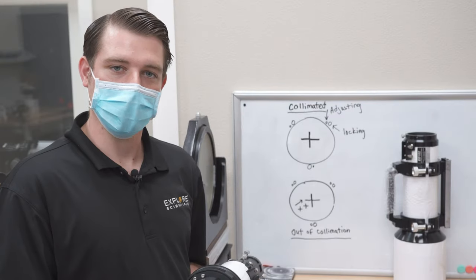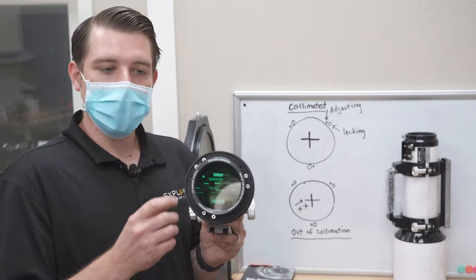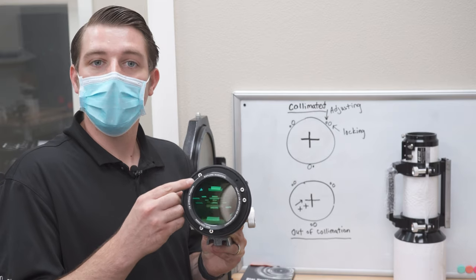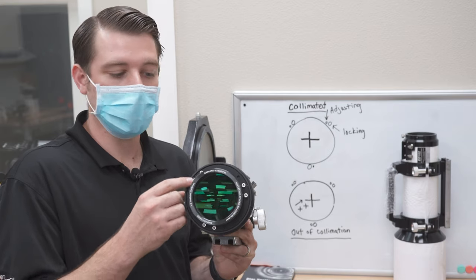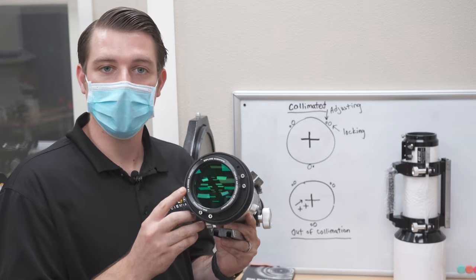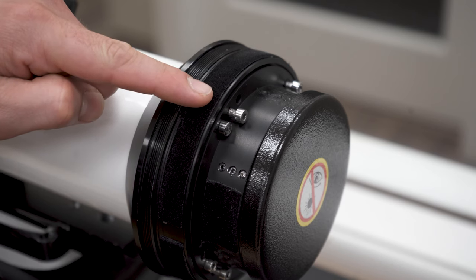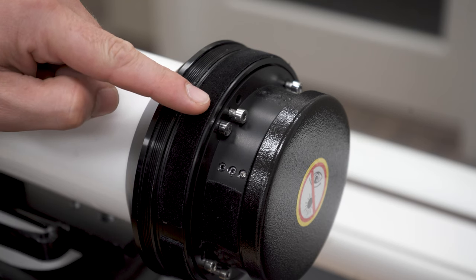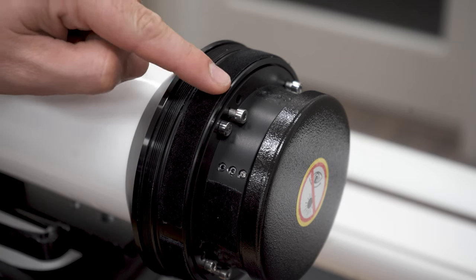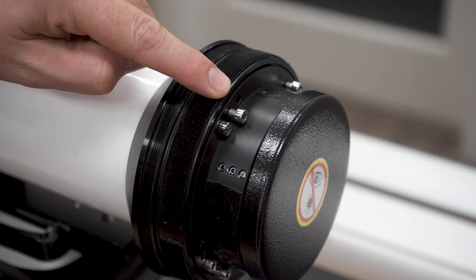Now to understand the front of your telescope a little bit better, you will see three to four groupings of two screws around the front of your lens cell. One is your adjusting screw and one is your locking screw. The one on the right is your locking screw and you'll see that it's sticking out a little bit farther than the adjusting screw.